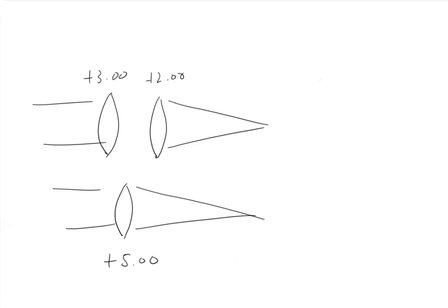So a plus 3 diopter lens and a plus 2 diopter lens in a row is the same as a plus 5. And likewise, a plus 3 diopter lens and a minus 2 diopter lens functions the same as a plus 1 diopter lens.